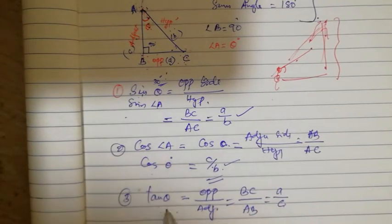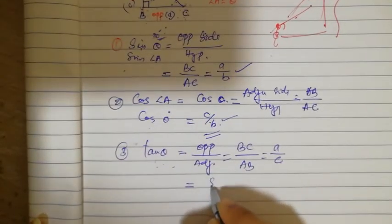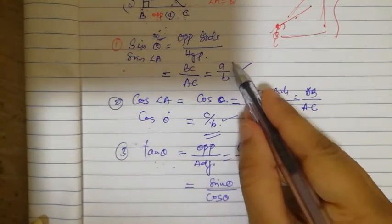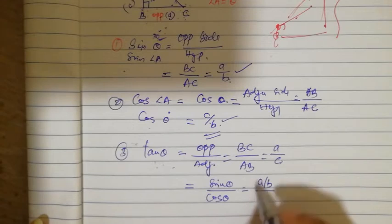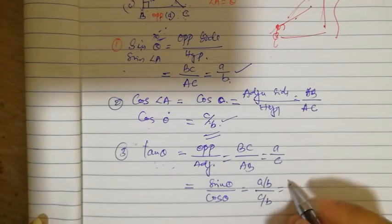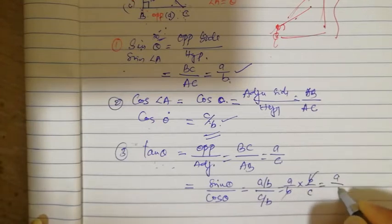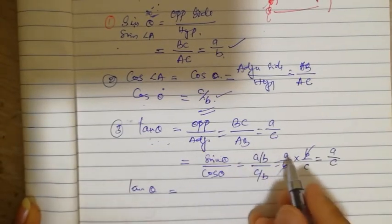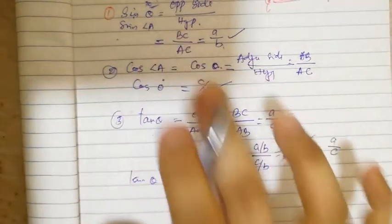Also, tan theta can be written as sin theta by cos theta. We can verify: sin theta is a by b, and cos theta is c by b. Dividing these fractions gives a by b multiplied by b by c — the b cancels — giving a by c. So tan theta equals sin theta by cos theta. These three are very important relations.